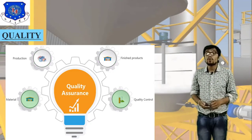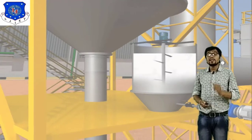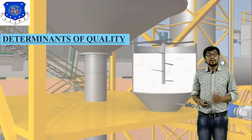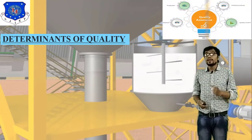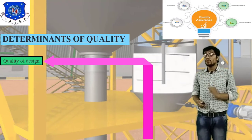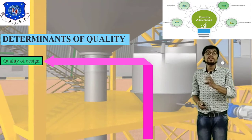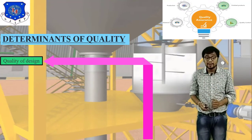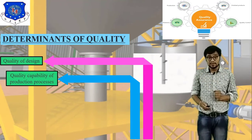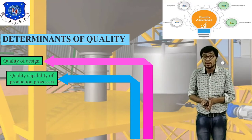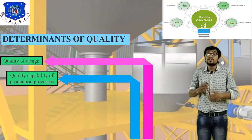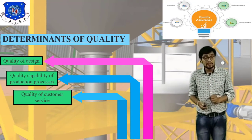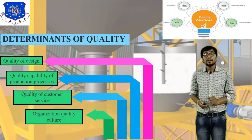Our next topic is determinants of quality — how to determine your quality. There are four different ways. First, quality of design — the way you design and structure your quality. Second, quality capability — the capability of products and processes, and the arrangement of products and processes. Third, quality of customer service. Fourth, organization quality culture. These are the integrated determinants of quality.